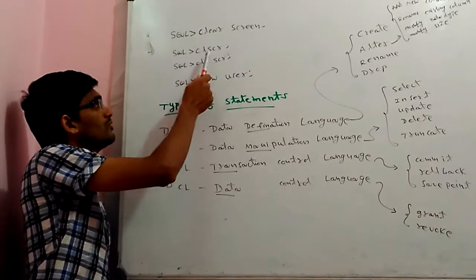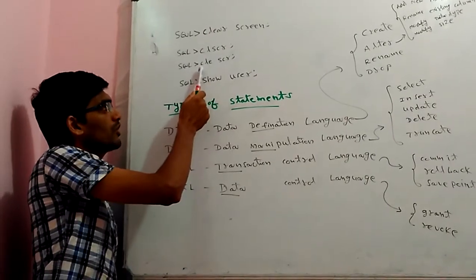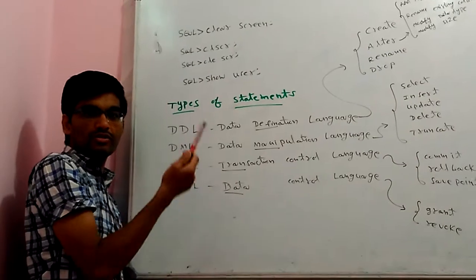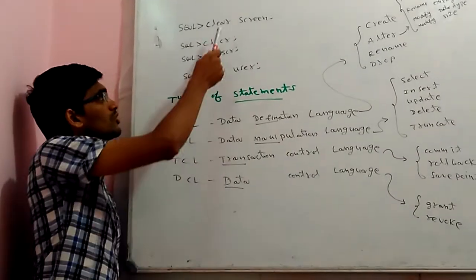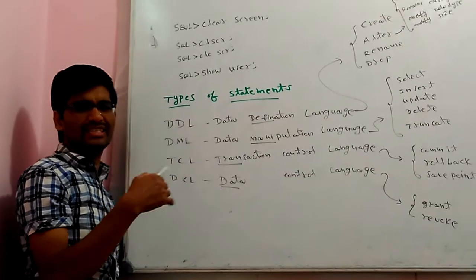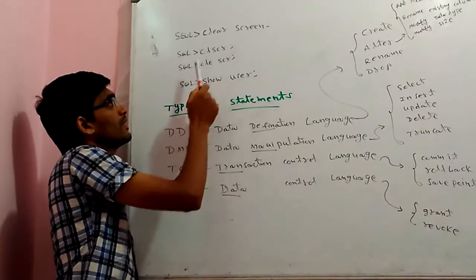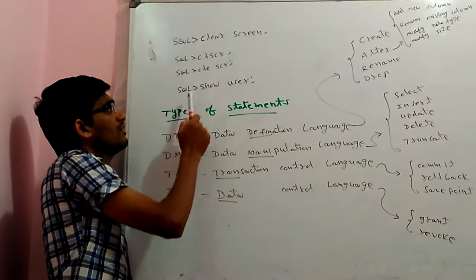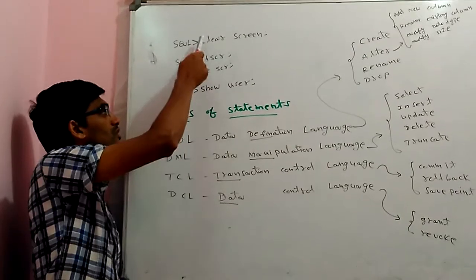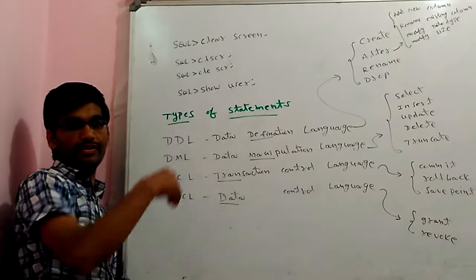You can use 'clsdr' semicolon, which will also clear the screen. Similarly, 'clsdr' semicolon does the same thing. So these are three different commands you can use to clear the screen: 'clear screen', 'clsdr', or 'clsdr' — all clearing the previous content in the SQL editor.